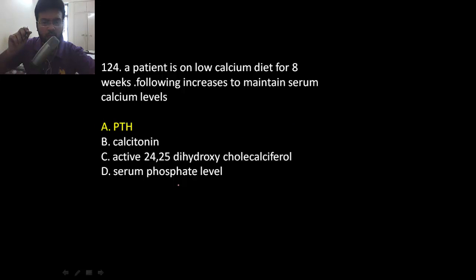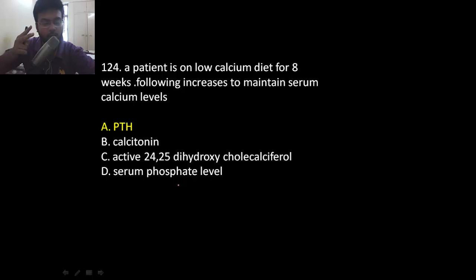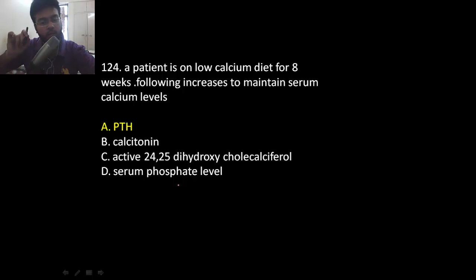For a patient on a low calcium diet for eight weeks, which hormone will increase to maintain calcium levels? Both parathyroid hormone and vitamin D increase blood calcium. The answer is parathyroid hormone. Calcitonin cannot increase calcium levels. There is nothing like active 24,25-dihydroxycholecalciferol — 24,25 is always the inactive form.